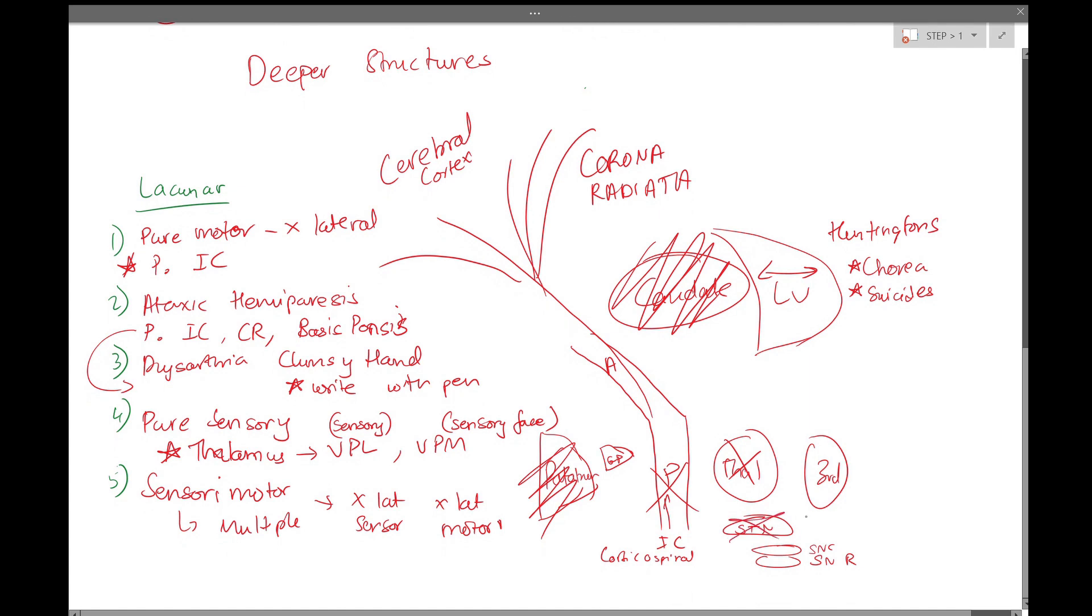Next, if you have a lesion of the subthalamic nuclei, this is what will give you hemiballismus, which is uncontrolled movements of either the arm or the leg, contralateral.